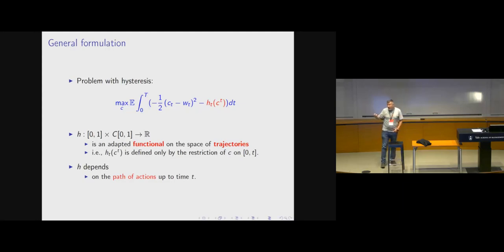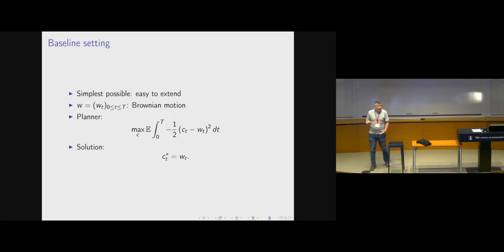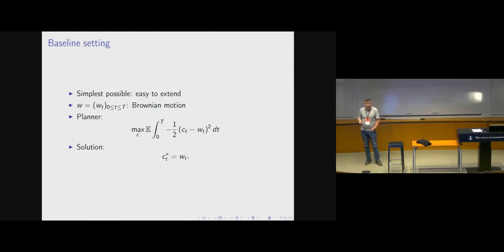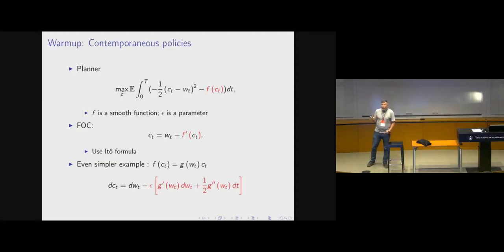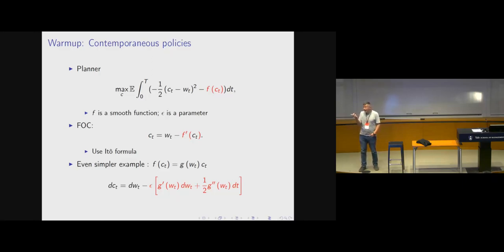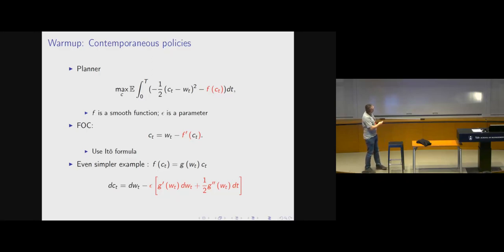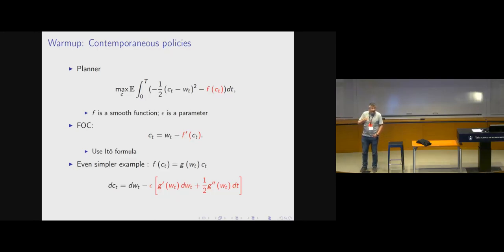The simplest setting: without the additional path dependency, I know the optimum exactly — I just choose consumption equal to the stochastic realization. Now suppose the additional effect depends only on the action today, not the whole trajectory: f(C_t). Then I can find first-order conditions, realization by realization. My consumption equals the Brownian motion realization W_t minus the additional marginal effect f'(C_t). I exercised a little bit more today; the effect is immediate — that's the marginal effect f prime.